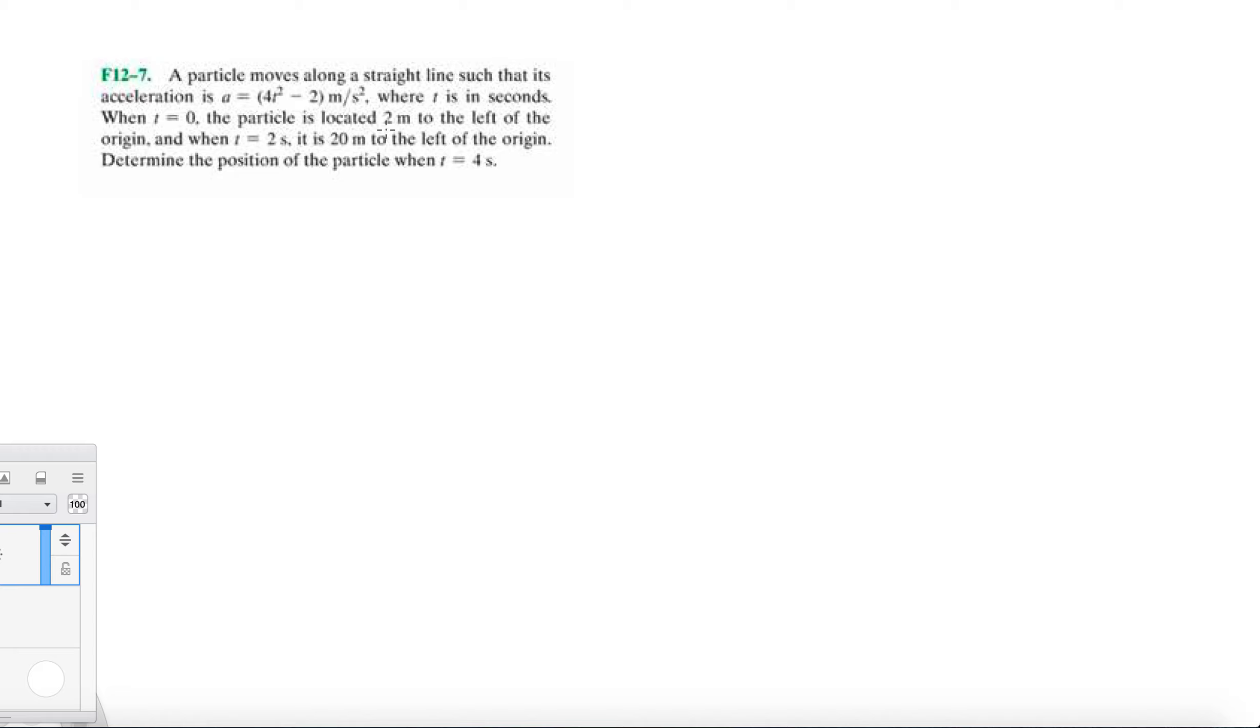And they tell you when t equals 0, the particle is located 2 meters to the left of the origin. So the origin is right here, and it's 2 meters to the left. So at t equals 0, s equals minus 2. And then when t equals 2, it is 20 meters to the left of the origin. So t equals 2, the position is 20 meters to the left, so minus 20.